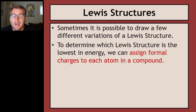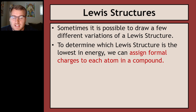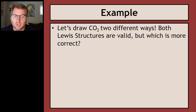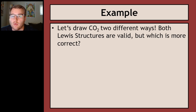Sometimes it's possible to draw a few different variations of a Lewis structure. To determine which Lewis structure is the lowest in energy, we can assign formal charges to each atom in a compound. A formal charge is kind of like an individual check for each atom to see how stable it feels. Our goal in a compound is for every single atom to be relatively stable, otherwise the compound will fall apart. Carbon dioxide is a good example because it can be drawn a couple of different ways — both valid — but we can figure out which one is more stable.